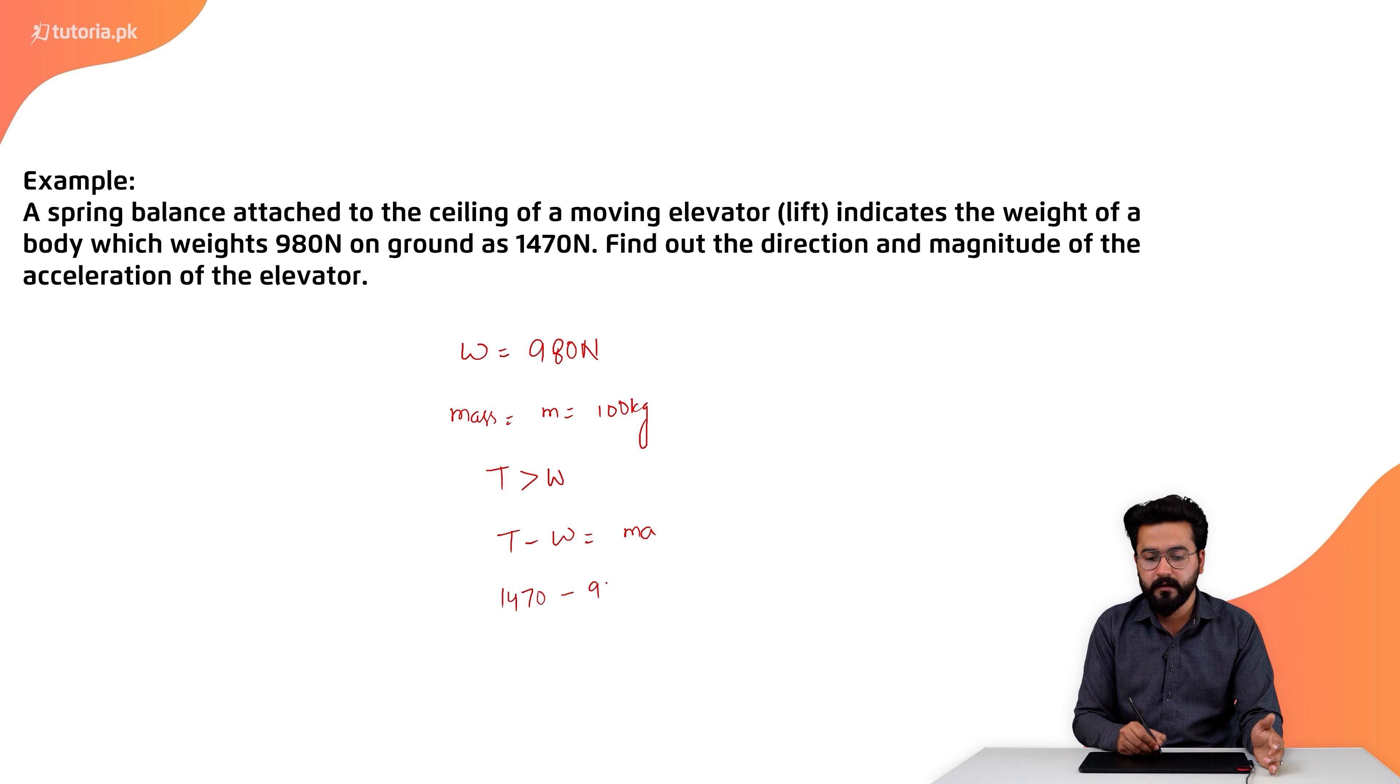What will we get students? Acceleration a will be equal to 4.9 meters per second squared. This is the acceleration which will be produced in the elevator. It means that the elevator is moving upward. The value of tension is more than weight.